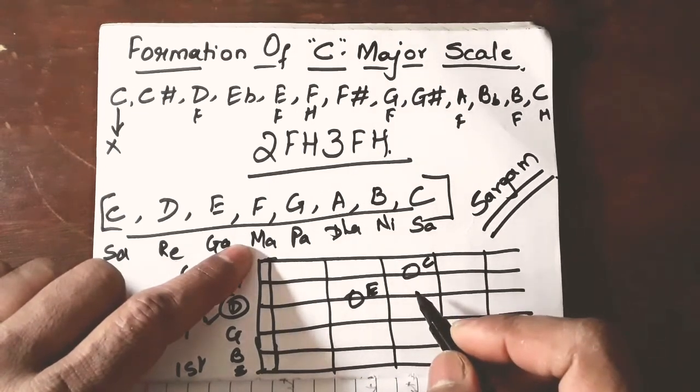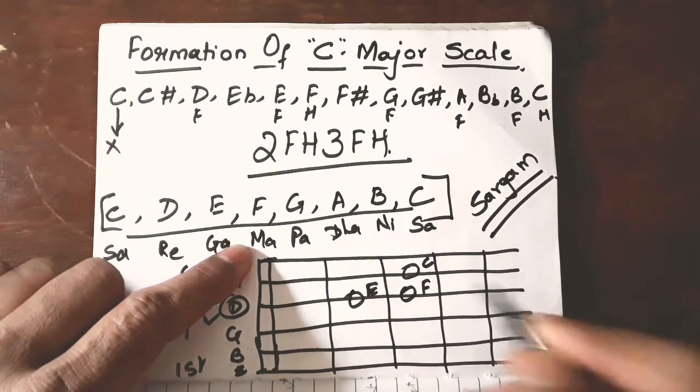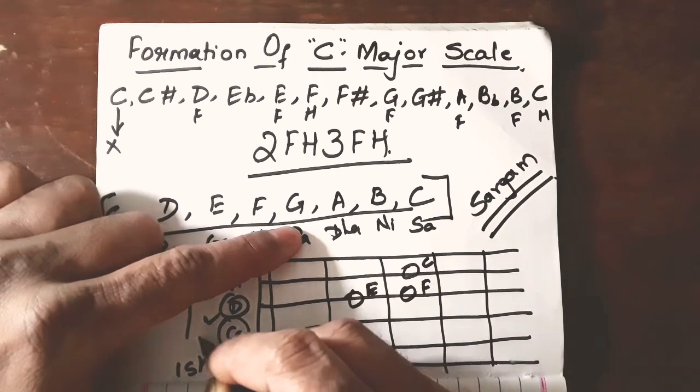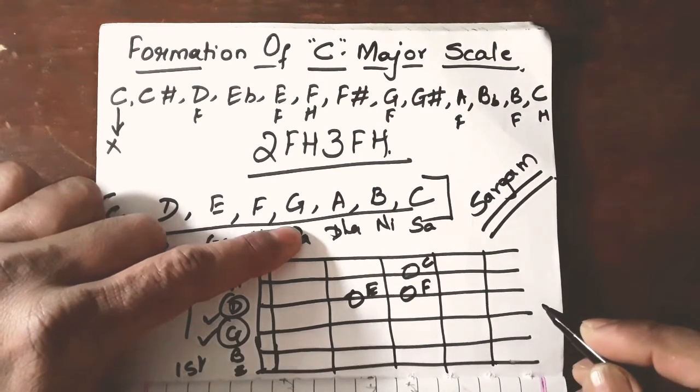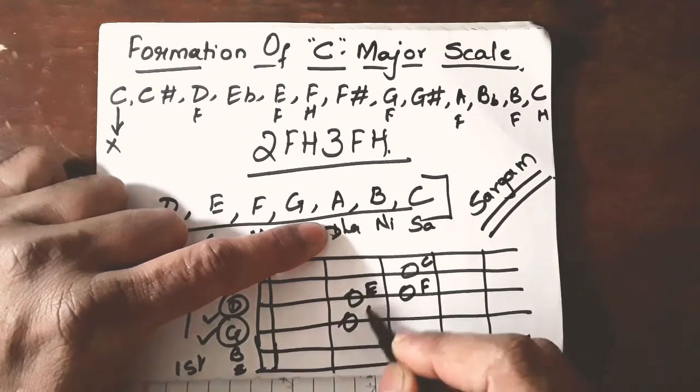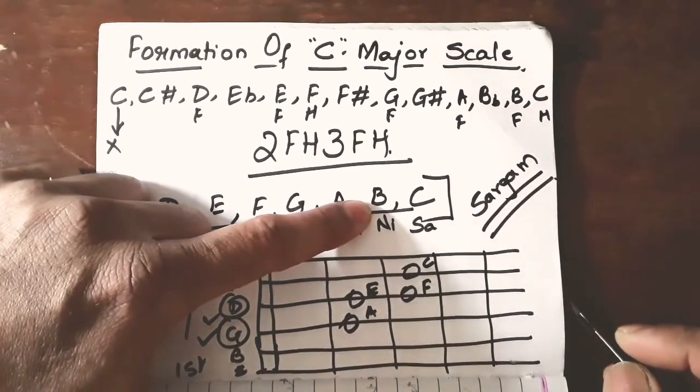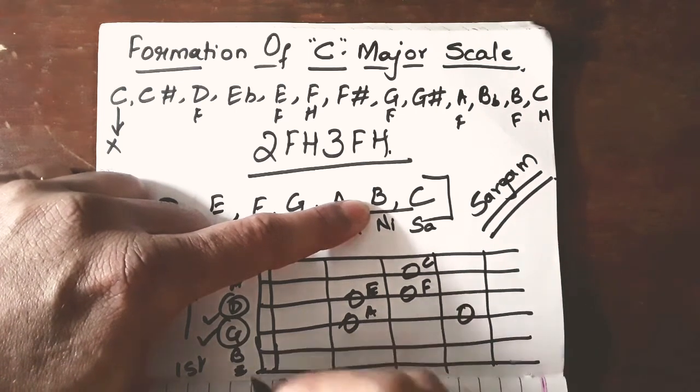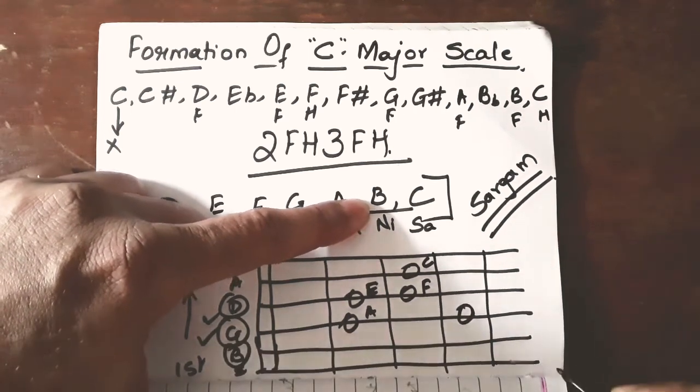Then Ma, that is H. After that G, G is here right. After that A, G sharp A, A. After that B. So, B is here as well as here.